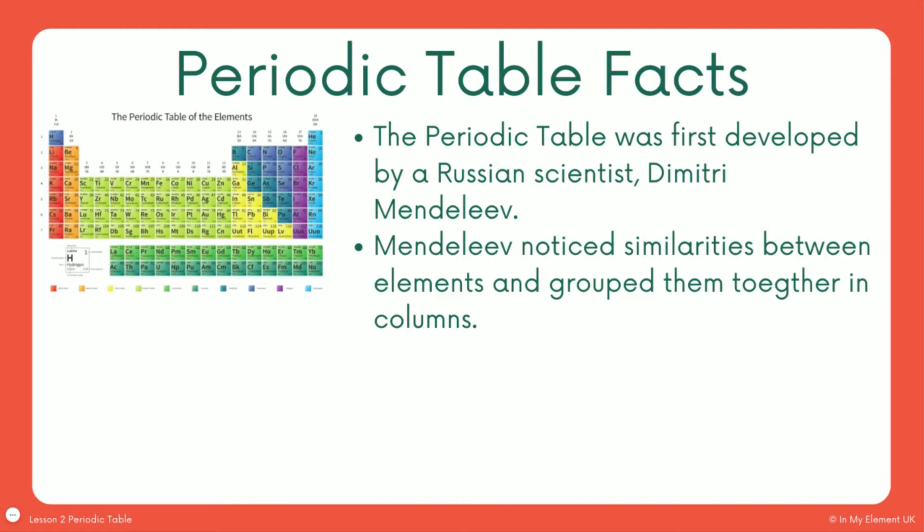He gave the columns and the rows different names. So the columns, if we look here, this is a column. The columns are called groups and the rows are called periods. You've got group one, group two, skip this main block here. Group three, group four, five, six and seven. It used to be that this final group was called group A. It's more commonly known as group zero now.